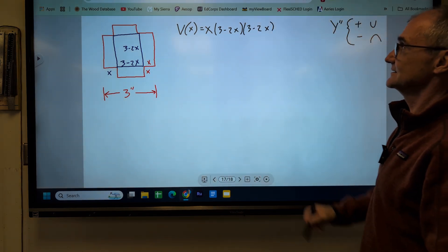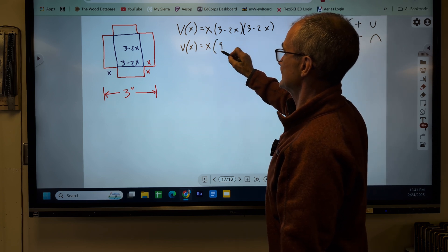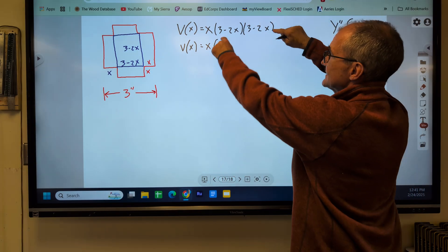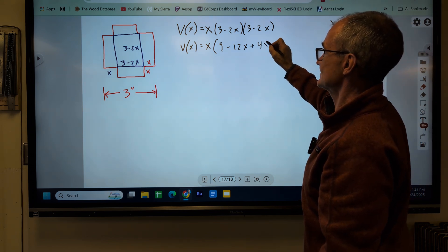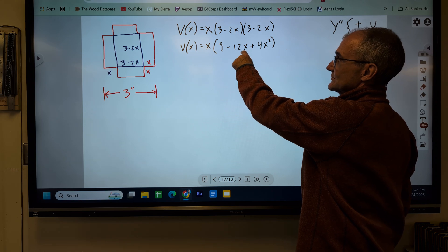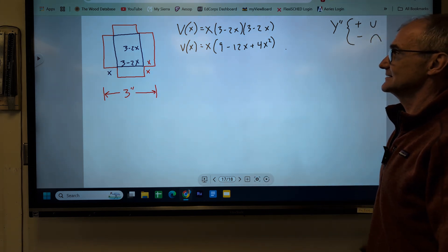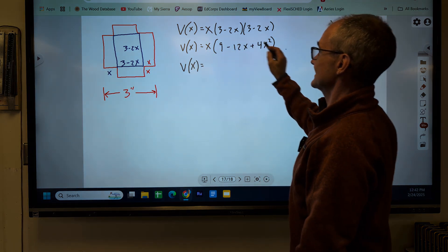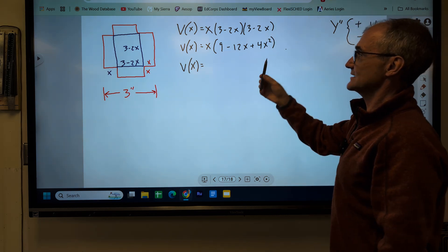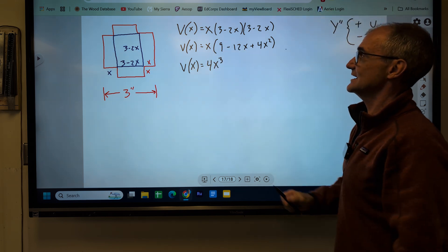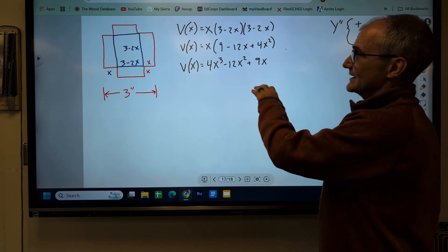So there's my volume function. Let's foil this out and clean it up a little bit. The volume of this box is going to be equal to X times, 3 times 3 is 9, negative 2X times 3 is negative 6X, negative 6X, negative 12X, negative 2X times negative 2X is 4X squared. So that right there, 4X squared minus 12X plus 9 is the area of that blue box. Then to find volume I multiply by the height by that X right there. So the volume function is going to be equal to, I'm going to distribute that X through the quantity, and then I'm going to rearrange them with my highest exponent first. So X times 4X squared is 4X to the third. X times negative 12X is negative 12X squared. 9 times X is 9X. So there's my volume function in black of that box.